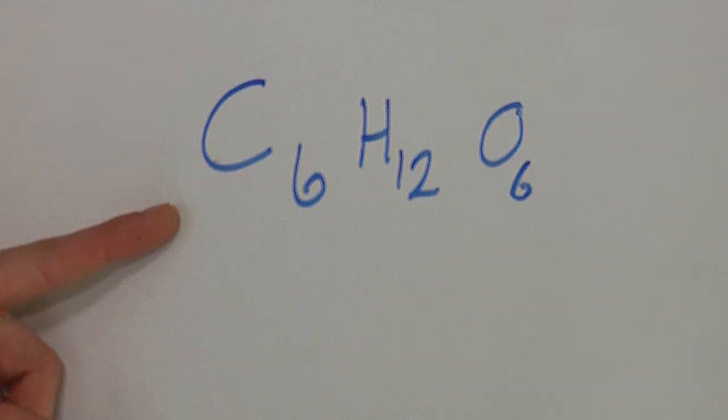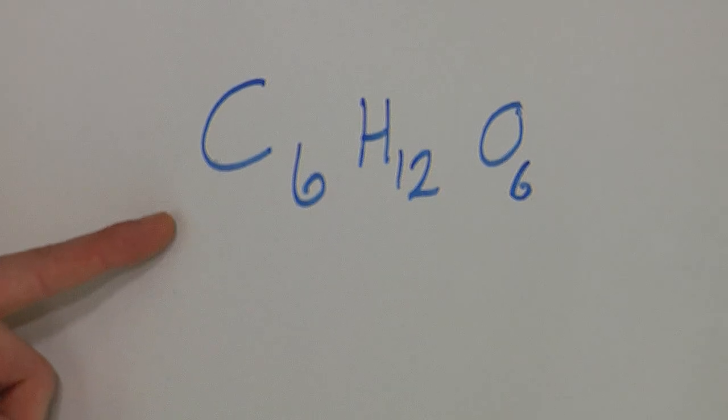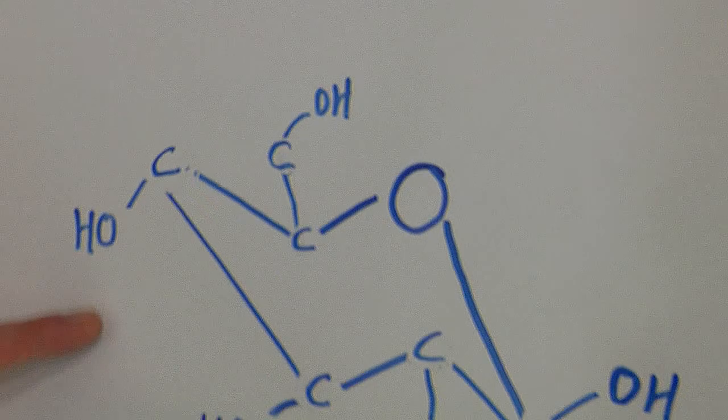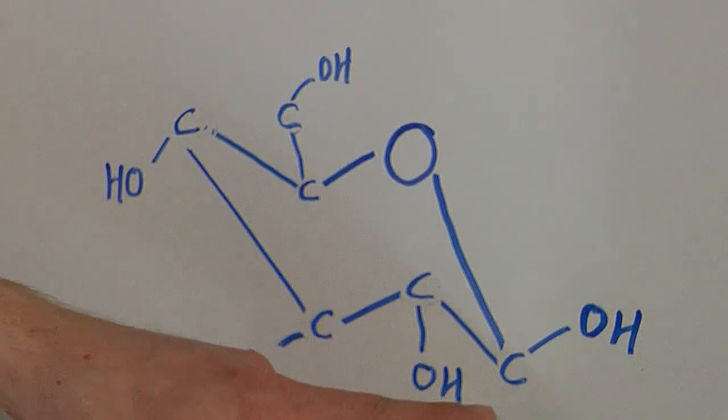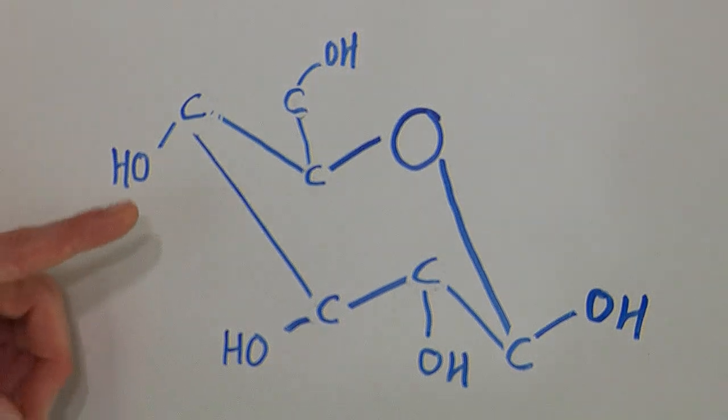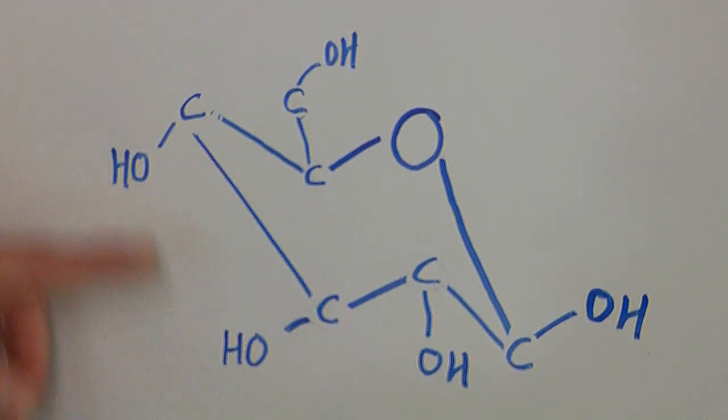As I said, glucose is C6H12O6 and it forms a ring with five carbons on the inside and one oxygen on the inside. And then you have several hydroxyl groups, which is OH, attached to different carbons.